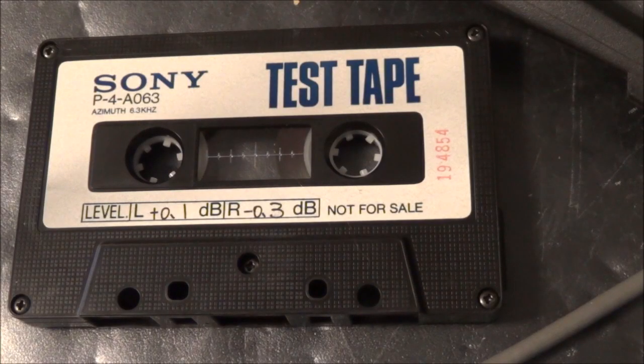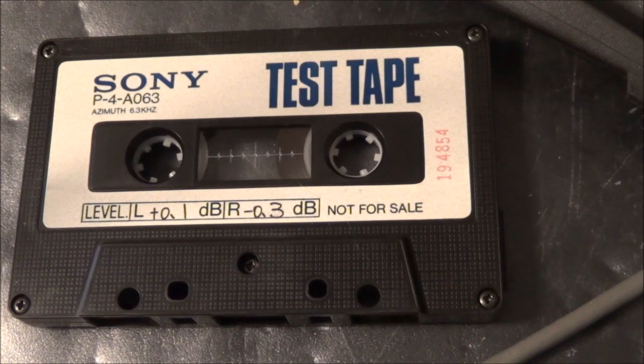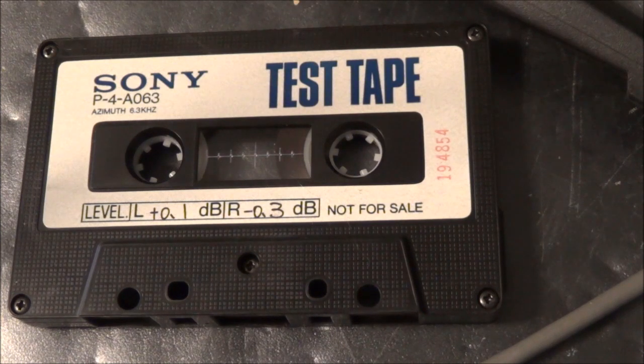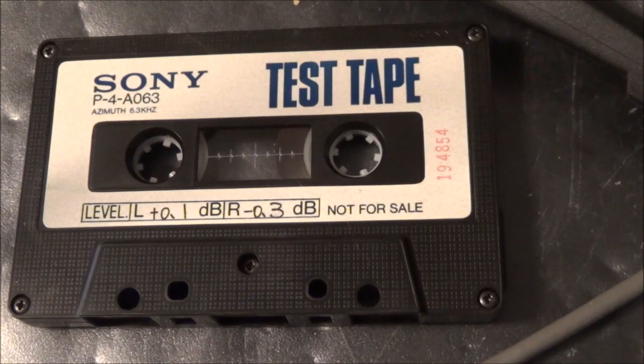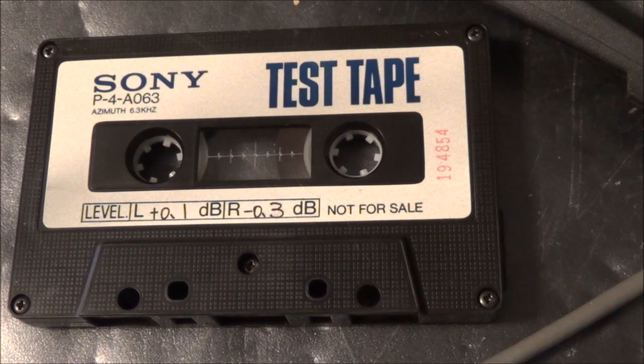Now here's the test tape I'm using. It's a Sony. I think it's a P4. It's recorded at 6.3 kilohertz. Of course, the azimuth test tapes are always recorded at higher frequencies because the high frequency dropout is more noticeable at the higher frequencies. That's why they don't use like one kilohertz or something like that. I've seen 6.3. I think I even have a tape here somewhere where it's even higher than 6.3 kilohertz. I think it's 10 kilohertz or something like that.